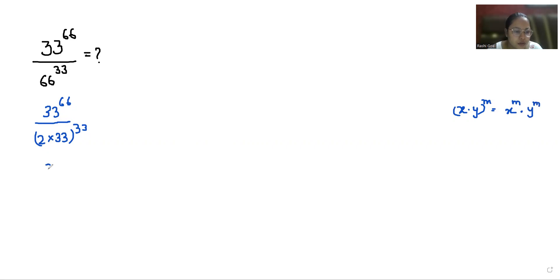So 33 whole power 66 by 2 power 33 times 33 power 33. Now in numerator we can write 66 as 33 plus 33.